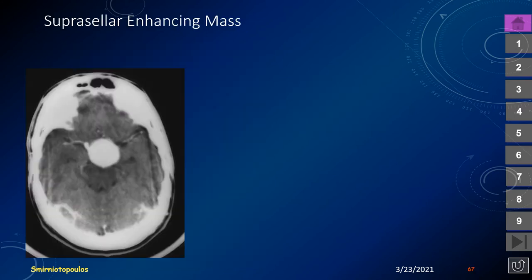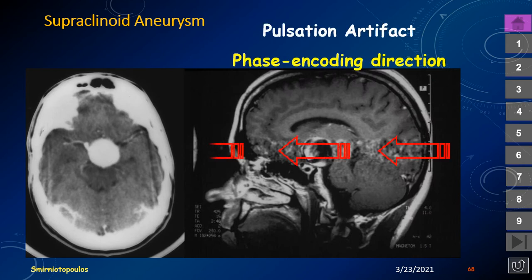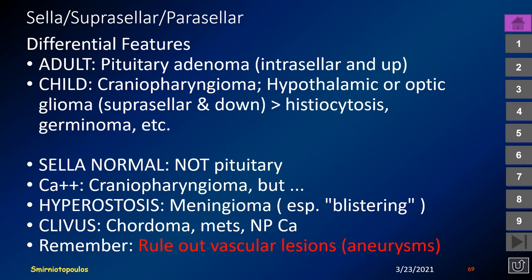This is the most dangerous mass presenting in the suprasellar cistern — an aneurysm of the internal carotid artery. This round, homogeneously enhancing mass on sagittal T1-weighted MR shows a significant pulsation encoding artifact directly related to the aneurysm's pulsation. In summary, for sellar, suprasellar, and parasellar differential diagnosis: adults first consider pituitary adenomas that grow up; in children, craniopharyngiomas and hypothalamic/optic gliomas arise in the suprasellar cistern and grow down. If the sella is normal, don't consider pituitary origin. Calcification suggests craniopharyngioma; clivus destruction suggests chordoma; always rule out vascular lesions.